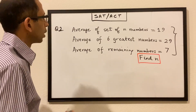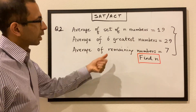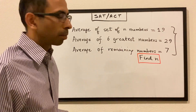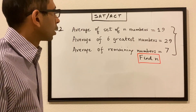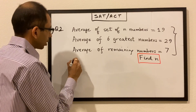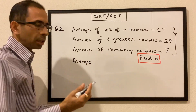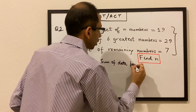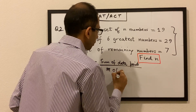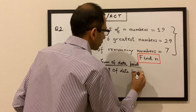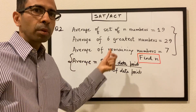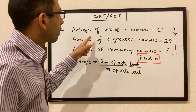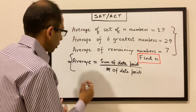Let's move on to the second question. The average of a set of n numbers is 19, the average of the six greatest numbers is 29, and the average of the remaining numbers is 7. We have to find the value of n. We know that average is nothing but the sum of the data points divided by the number of data points.